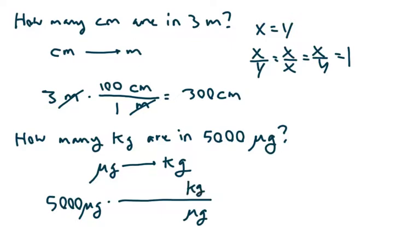We start with 5,000 micrograms and want a fraction that cancels out micrograms — micrograms on top, so we put it on the bottom. The unit we want to cancel goes on the bottom; the unit we're going to goes on the top. Instead of asking how many kilograms are in one microgram, let's figure out how many of each are in one gram. How many kilograms are in one gram? There are 1,000 grams in a kilogram — 10 to the third — so there are 10 to the negative third kilograms in a gram. For micrograms, micro is the sixth power, and there are one million — 10 to the sixth — micrograms in one gram.